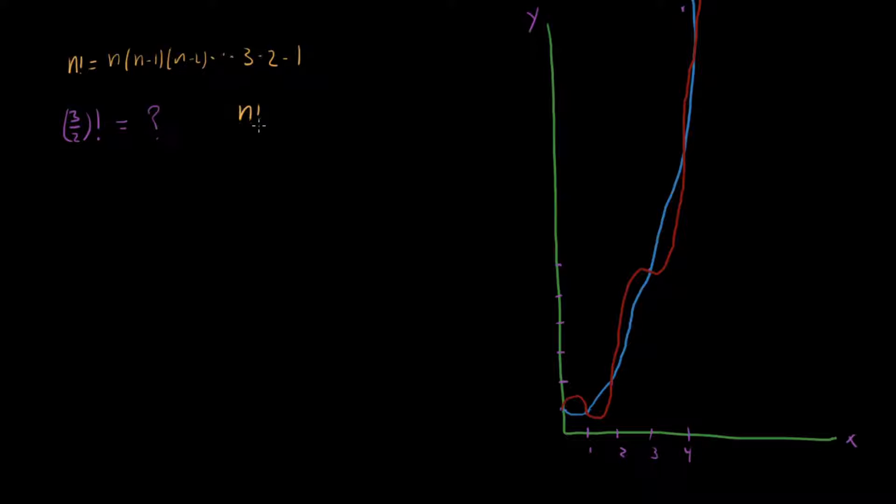And that's that n factorial is equal to n times n minus 1 factorial. We like this property because this is one of the most useful parts of the factorial function—it's recursive in this way. And so that means, and what that suggests to us is that our generalization, the curve that we draw through these points, should also satisfy this relationship, not just for integer choices of n, but for any value of real or complex n.